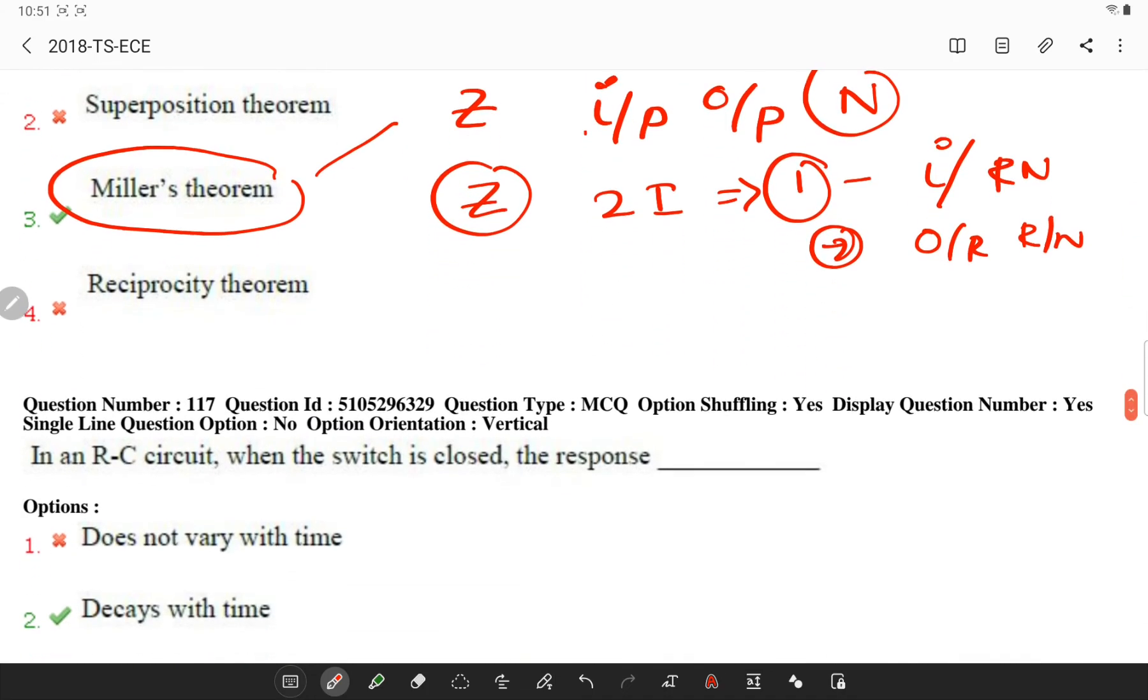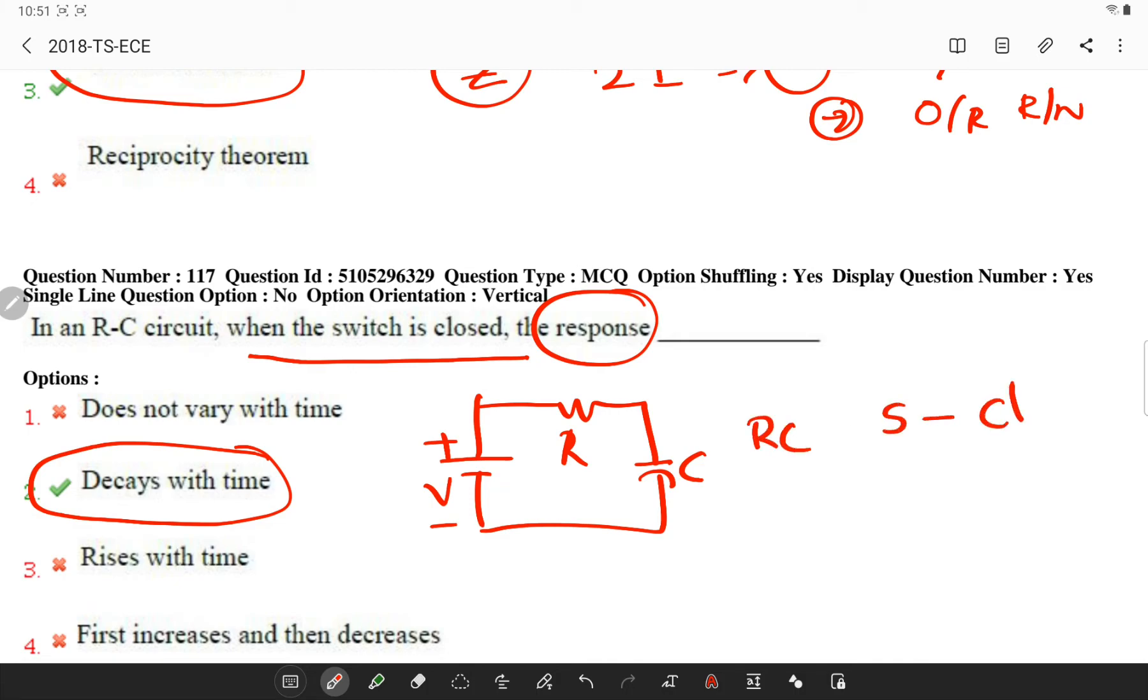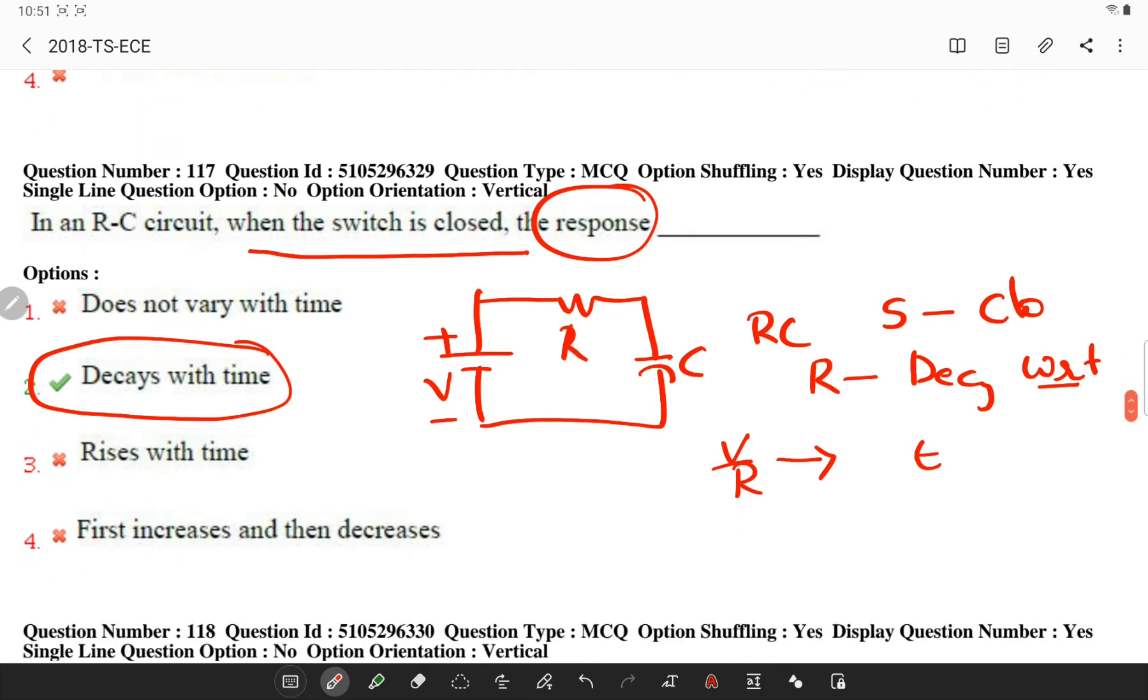In an RC circuit, when the switch is closed, what is the response? The response will be decaying with time. If you see this circuit, RC circuit, and you have a battery. In this RC circuit, when the switch is closed, the response will be decaying with respect to time, and the response V by R decreases with increase in time. In an RC circuit connected to a DC voltage source, the current will be decreasing from its initial value I0 to 0 as the voltage on the capacitor reaches the same value.